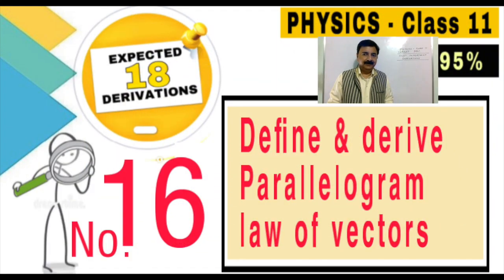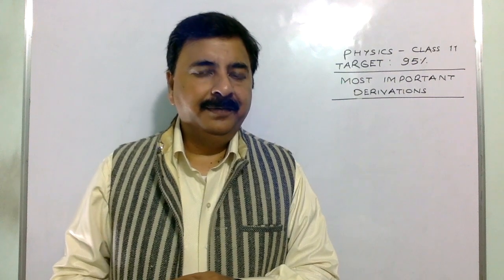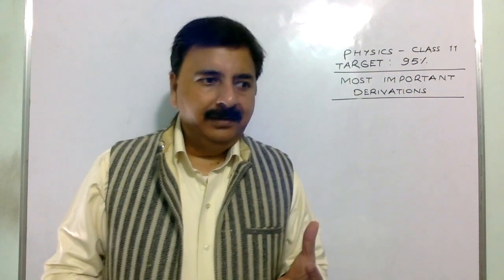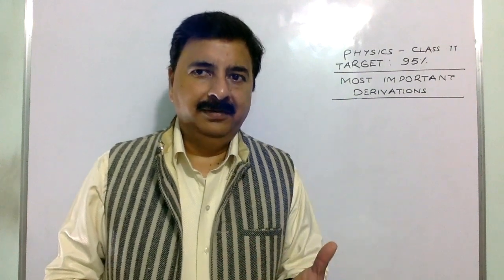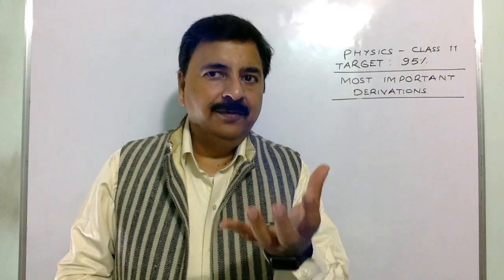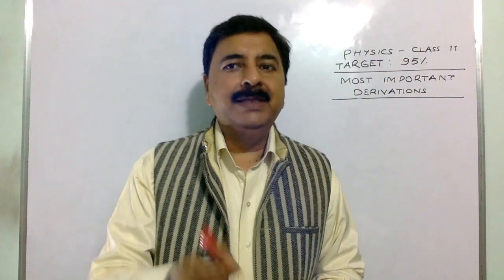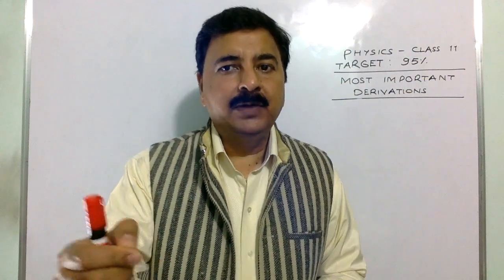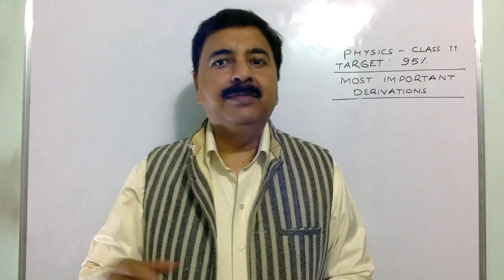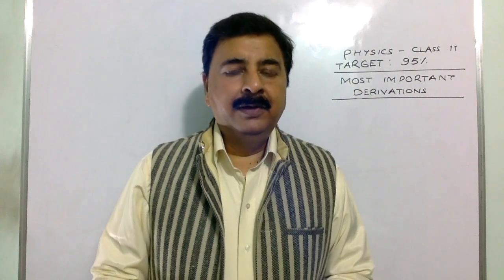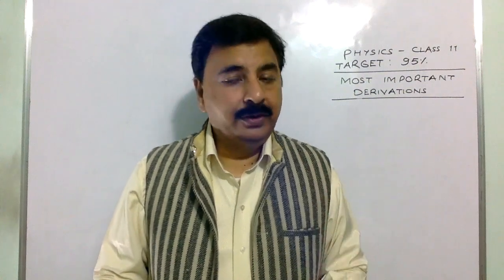Derivation number 16 is the parallelogram law of vectors. From the vector chapter there are two derivations — one is triangle law, the other is parallelogram law of vectors. I can say that it is the backbone of class 11 physics. How to find the resultant of two vectors: R = √(P² + Q² + 2PQ cosθ), and how to find the angle of the resultant with some vector. That derivation should come, or some numerical linked with that — go through it in a good manner.